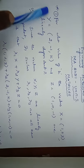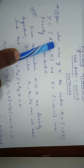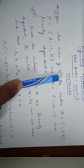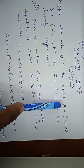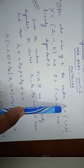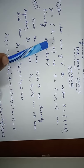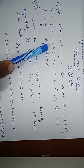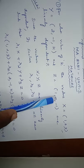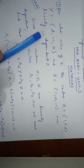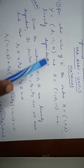Sum number 1: For what value of K are the vectors X = (1, 2, 3), Y = (2, -1, K), and Z = (1, 0, -1) linearly dependent?